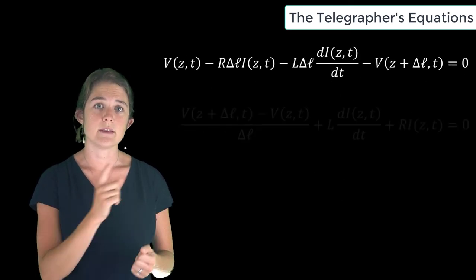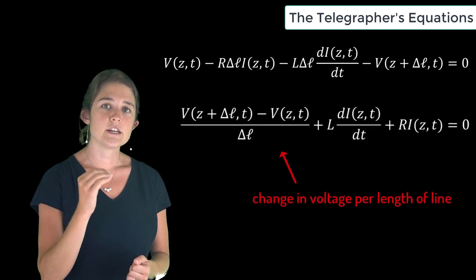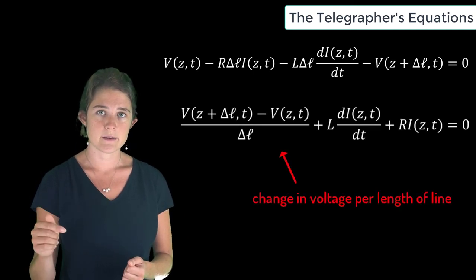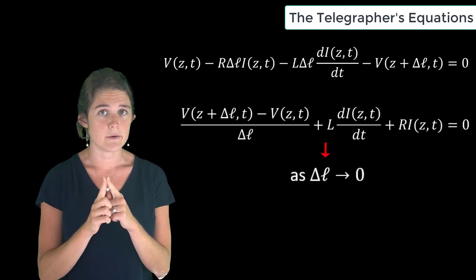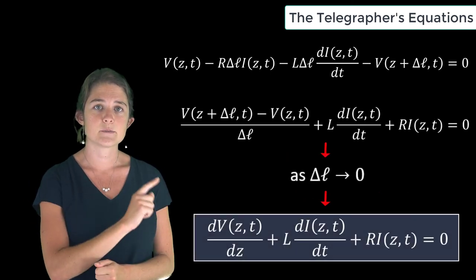We can rearrange this equation to obtain this relationship of change in voltage per length. Then if we let the length Δℓ approach zero, this turns into this spatial derivative.